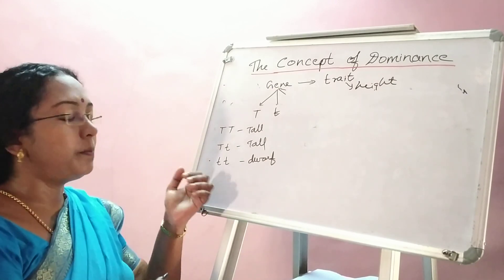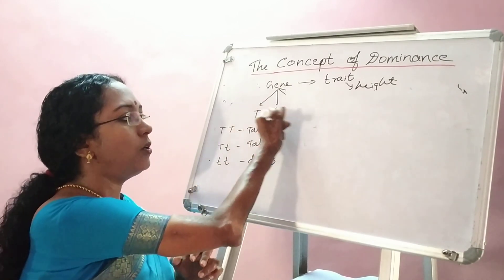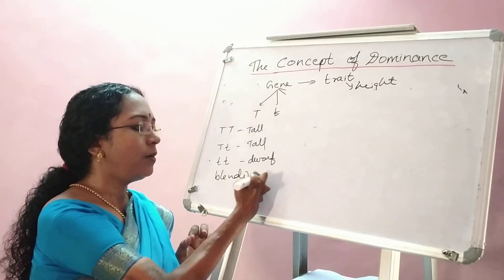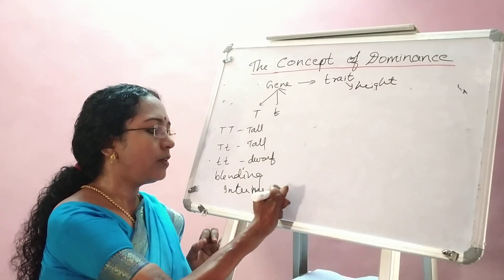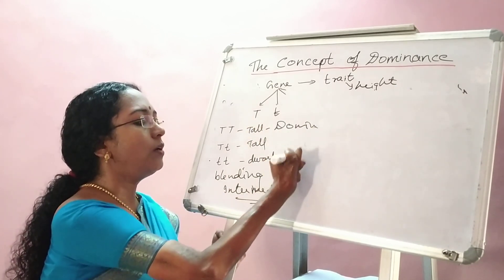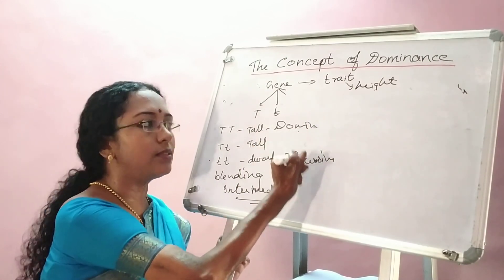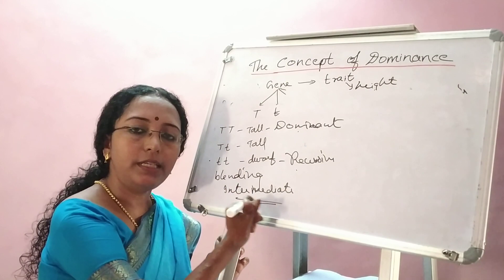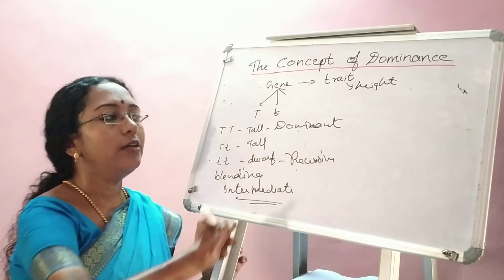For this character that Mendel studied, there were only two forms for the alleles — not many forms. So naturally there was no blending of character and no intermediate form. They were either the dominant form or the recessive form, because there were only two alleles and their combinations kept forming like this.